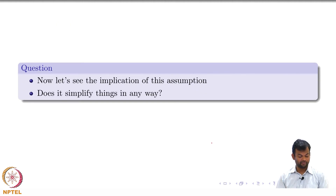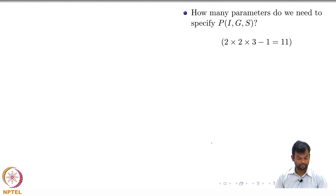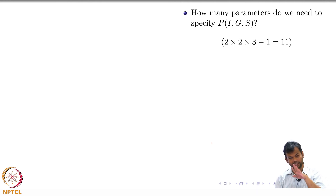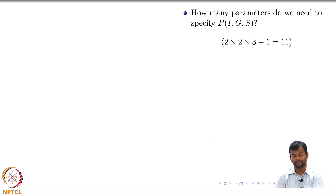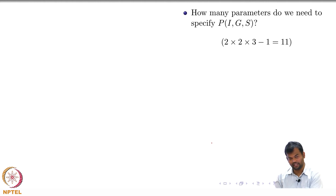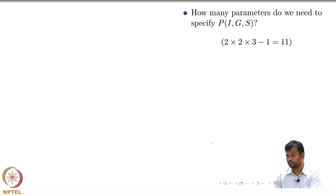For this running example, we are going to assume that SAT score is independent of grade given intelligence. Let us see the implication of this assumption. How many parameters do we need for I, G, and S — where grade can take 3 values? 2 × 2 × 3 − 1 = 11 parameters.